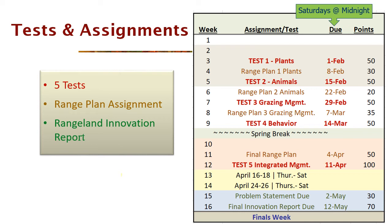So five tests — four before spring break, one after spring break that brings it all together. The rangeland plan is an interesting assignment where you go out into the world, find a piece of ground, and start to apply some of these principles. It's valuable because if someone asks you when you're applying for a job whether you've ever done a management plan, you'll be able to say yes. It comes in four different sections throughout the class, with something due almost every week, always on that Saturday at midnight. Then after the field trips, we'll develop the rangeland innovation report, which is basically trying to find ways to solve challenges that we saw on the field trip.